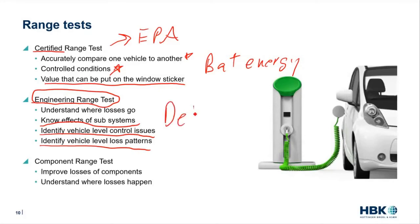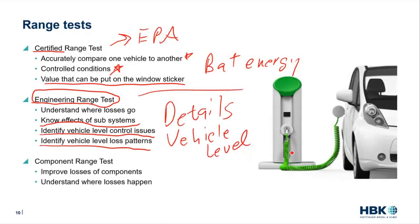This is details at the vehicle level. Because we're making decisions on components — whether we want to change them, update our control schemes, or find a new supplier — we're also going to do component level range tests. These are more detailed. We're going to look to improve the losses of components: maybe change when we turn on a cooling pump, change out a heating unit, or update the inverter control for our propulsion motors. The point is to understand at the component level how losses happen and how we can make changes.